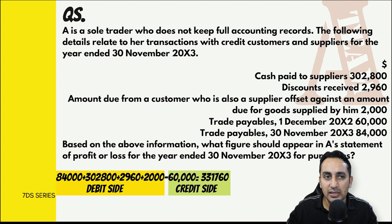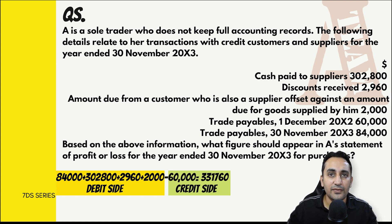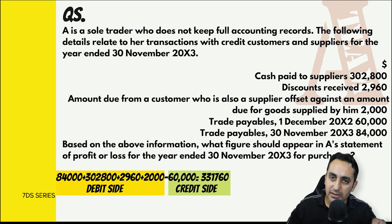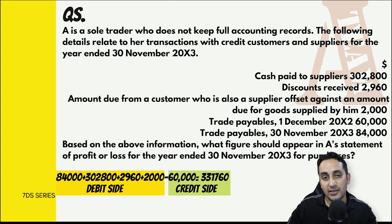सवाल में requirement है कि profit & loss account के अंदर purchases का amount कितना जाएगा। Information के अंदर trade payables यानी creditors से related सारी information दे रखी है, और creditors account के अंदर ही credit purchase की entries आती हैं। तो हम assume करते हैं कि credit purchase शायद missing figure है। बाकी सारी चीज़ें सही जगह place करें तो answer मिल जाएगा।